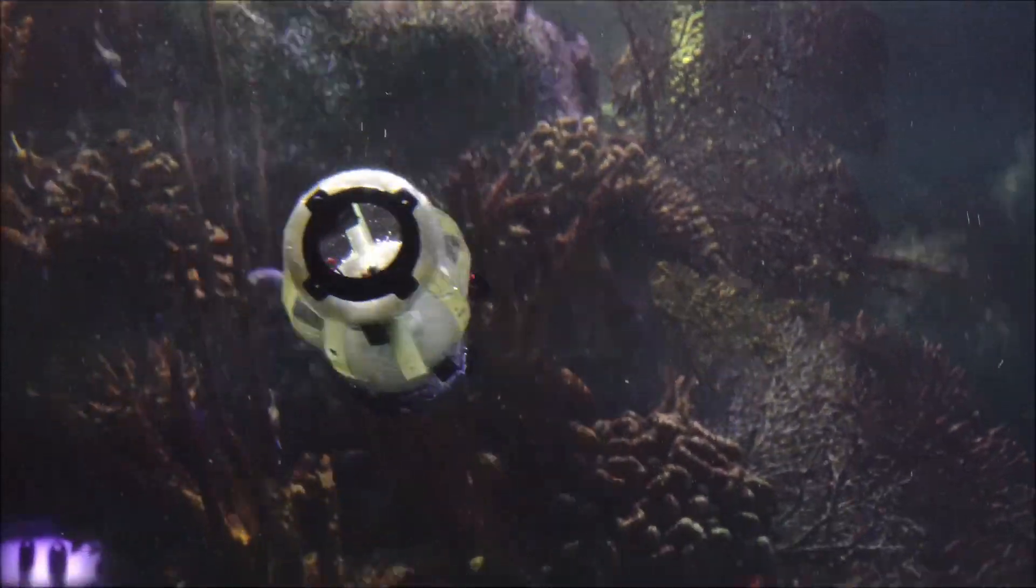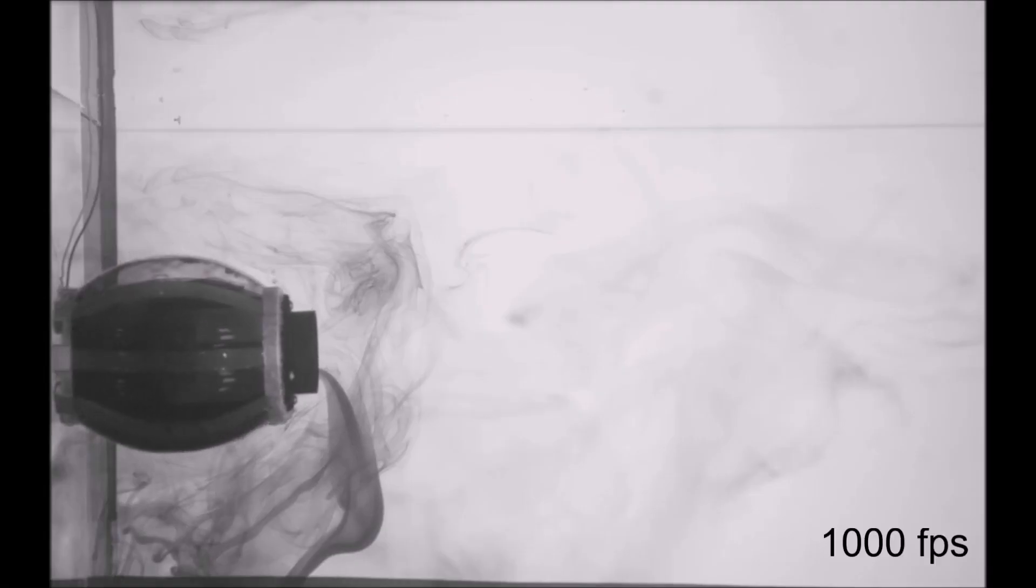Taking inspiration from cephalopods, here we present an underwater robot with a compliant body that can achieve repeatable jet propulsion by changing its internal volume and cross-sectional area to take advantage of both jet propulsion as well as the added mass effect.